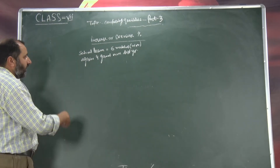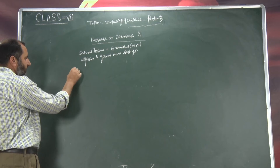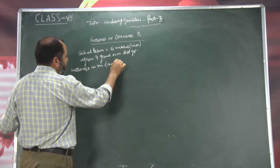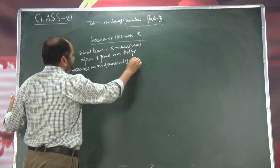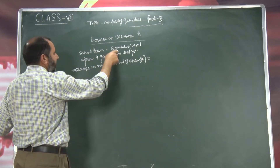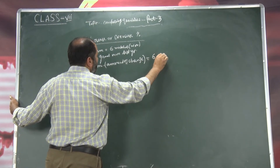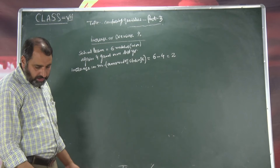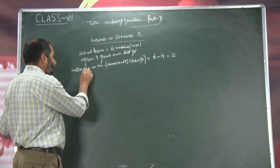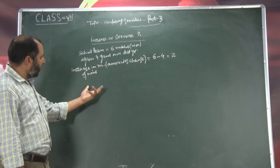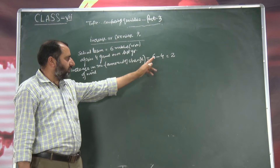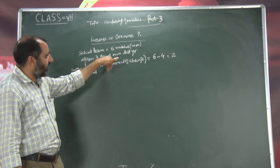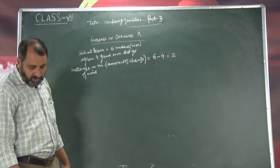Pehle hum dekhinge increase in number — yani amount of change jis ko kehte hai, increase in number. Increase in number means amount of change — amount of change kya hai. Amount of change means is school team ne kitne match total jeet liye hain: six. Last year kitne match jeete: four. So amount of change is two matches — yani two matches amount of change hai. Increase in number of wins — is saal chhe matches jeete, pichle saal four. So 6 minus 4 — to wahaan aya hai 2 matches.